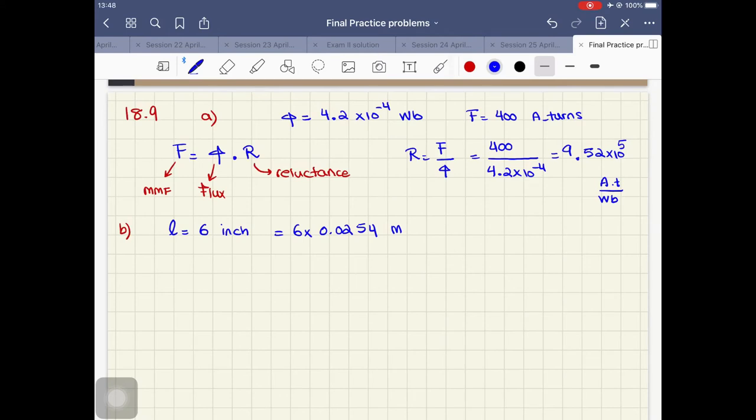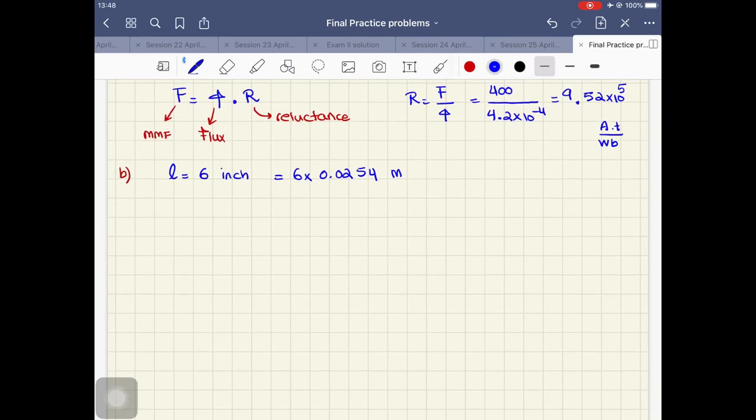Now in the exam, if you need to have these conversions like inch to meter, I'm going to give the conversion coefficient to you, so don't worry about that. Now what I need to find is H, which is F over the length, and that is equal to 400 over 6 multiplied by 0.0254, and that is giving me 2625 ampere turns per meter. This is in SI.